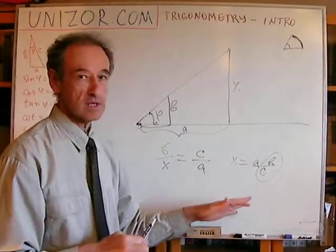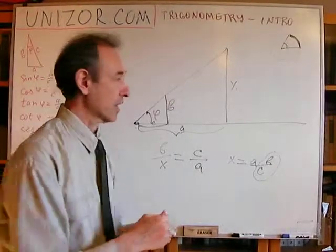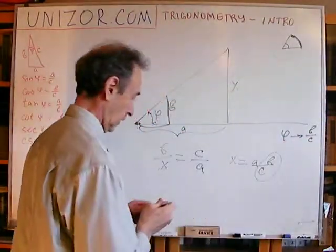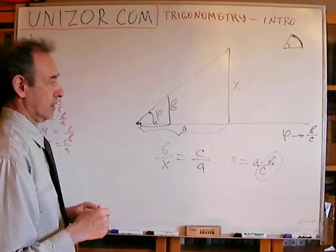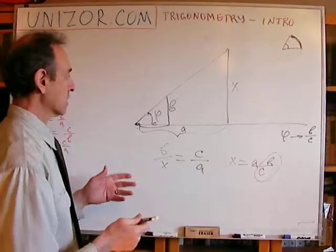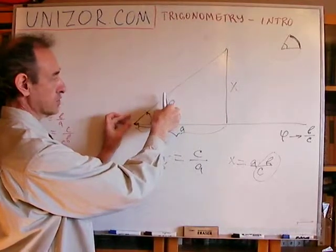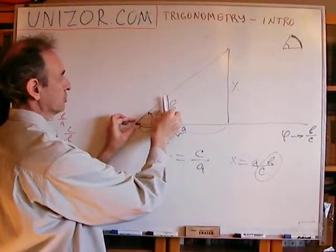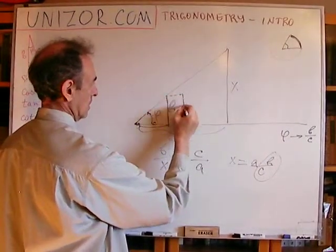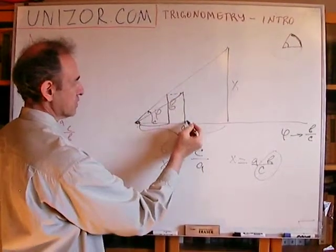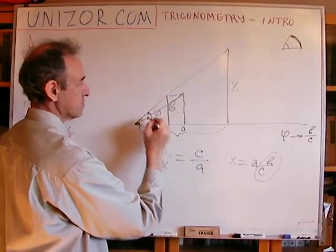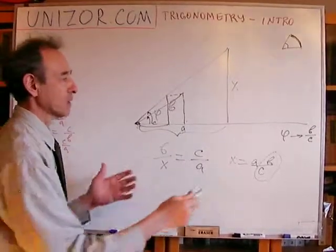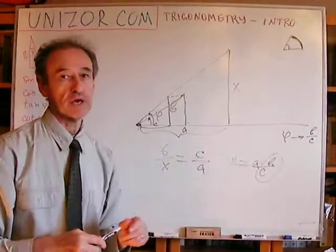Now let's consider that B over C for any angle is tabulated somehow, so there is a table which has the correspondence. How can we construct this table? Well, basically we can have one particular rod B, install it in one place, measure the angle, measure C, and calculate. Put it a little further — the angle will be smaller, B would be the same, C would be a little bigger, so this B over C ratio would be a little smaller. So basically, moving B back and forth, we can tabulate the values of phi, the values of this ratio for every phi.